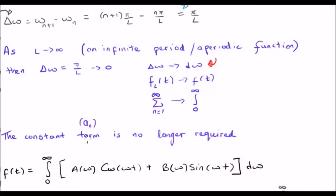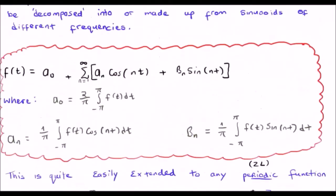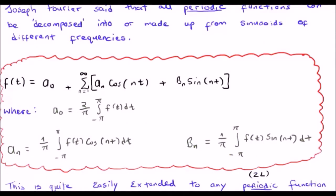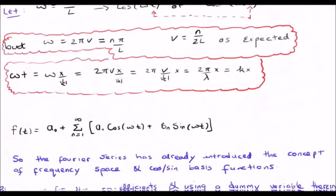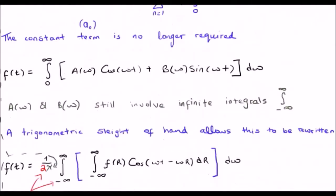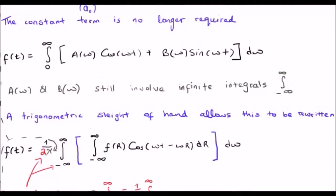You have to remember that a(ω) and b(ω) are the Fourier coefficients, but they themselves involve their own integrals. Before we say more, let's remind ourselves: if we go back to the discrete Fourier series, b(n) and a(n) involve their own integrals. This is nothing different. The a(ω) and b(ω) still involve particular integrals.